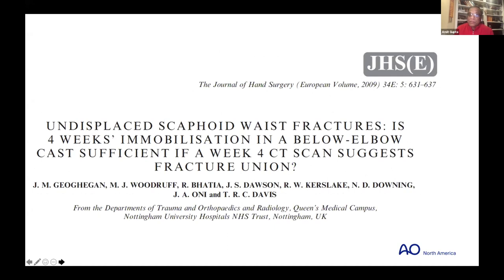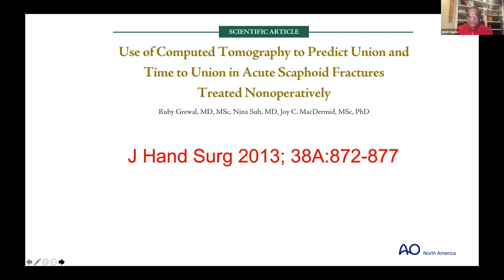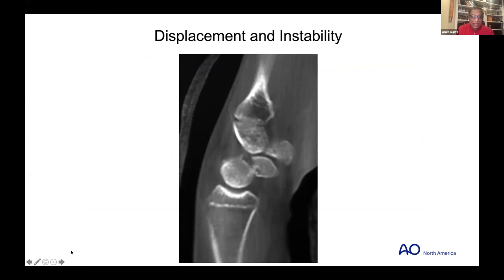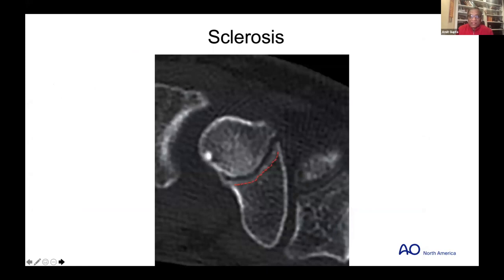There have been good articles coming from Nottingham, Leicester, and Derby. An article from Tim Davis's unit showed that CT scan at four weeks will suggest whether the scaphoid is healing or not, and that you can get perhaps 50% union and have the patient start using their wrist. That suffices at about four to six weeks of immobilization. Studies from Canada by Ruby Graywall and Nina Su in 2013 showed displacement, instability, fracture gapping, and comminuted fractures on CT need to be treated early as they are unstable.